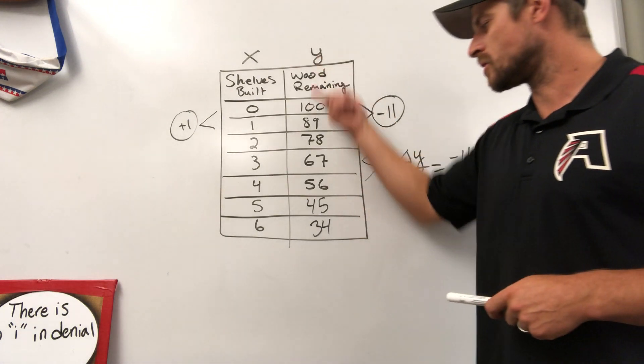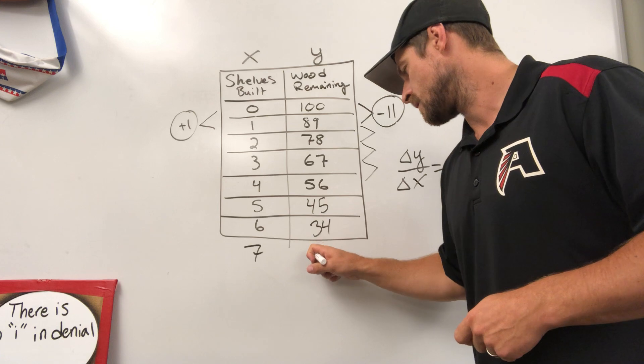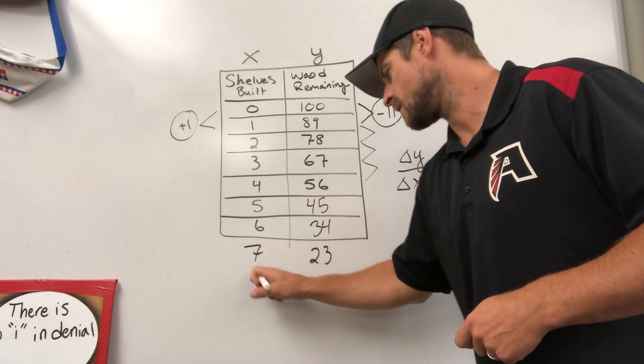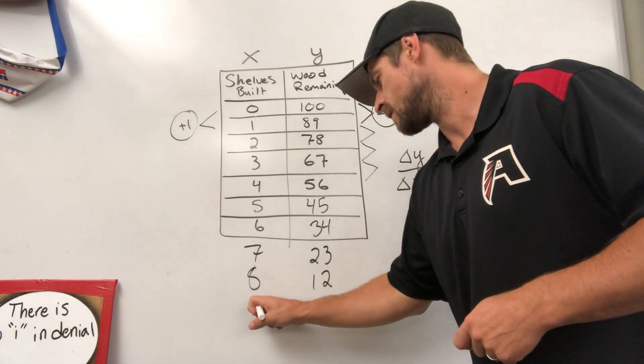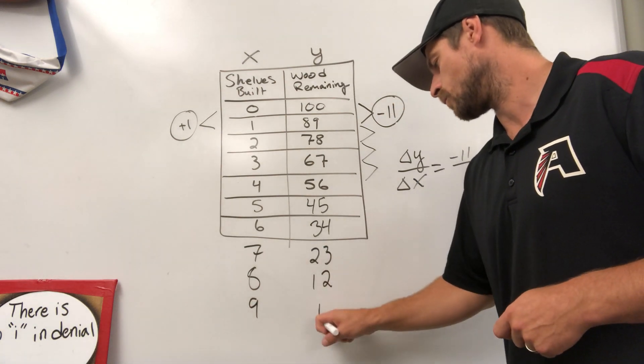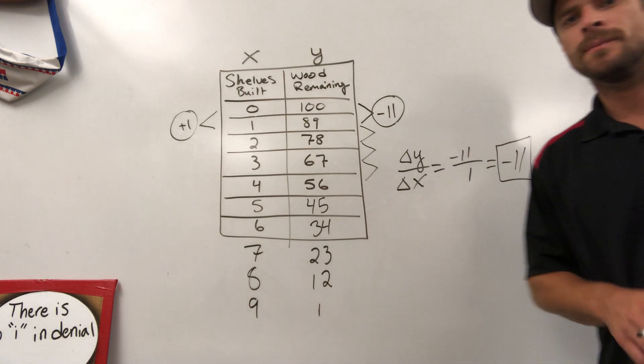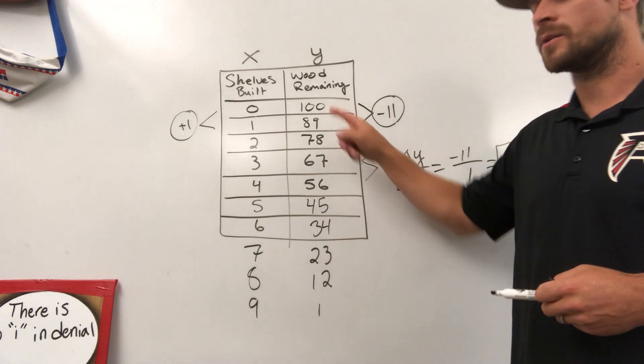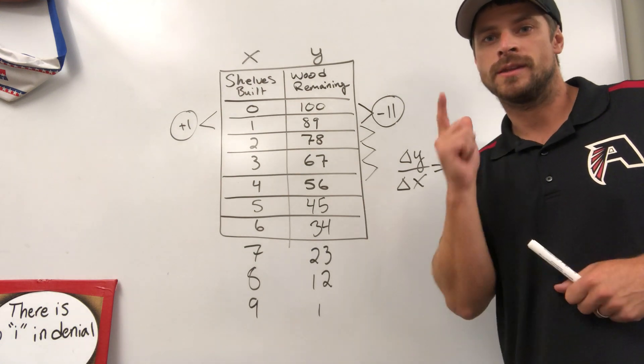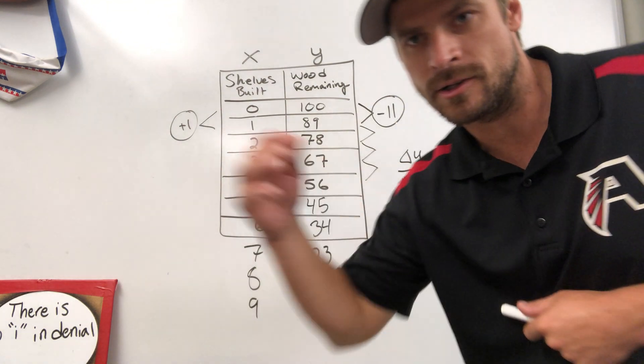And we can determine that after 7, 23, 8, 12, 9, 1, we would be able to make nine shelves. We'd have one piece of wood remaining if we started with 100. Hopefully this helps, study hard and good luck on your upcoming test.